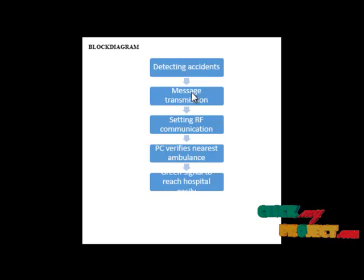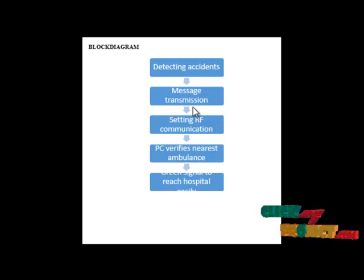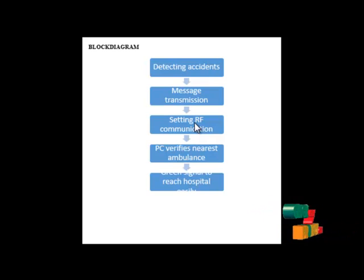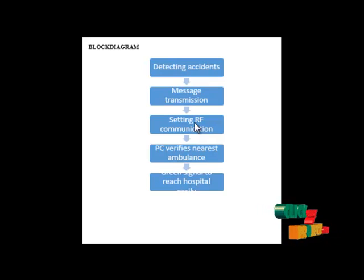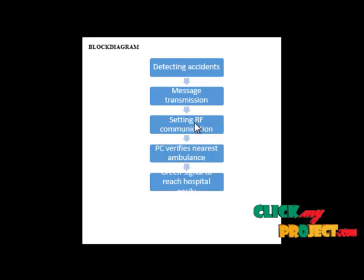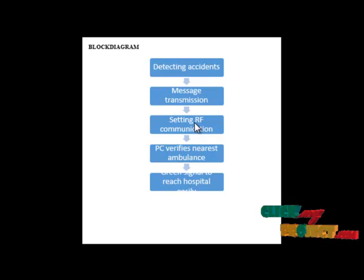Next, we go to messages transmitted where the accident is held, then we go to setting up RF communication. RF is nothing but radio frequency. It is an electronic device which, connected to an antenna, produces an electromagnetic signal such as in radio and television broadcasting, two-way communications, or radar. Heating devices such as microwave ovens, although of similar design, are not usually called transmitters as they use the electromagnetic energy locally rather than transmitting it to another location.